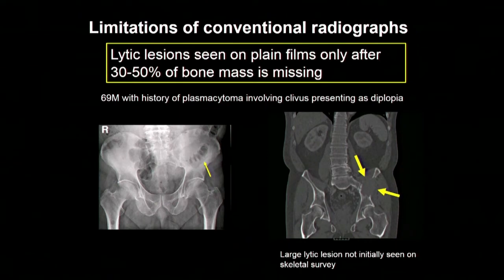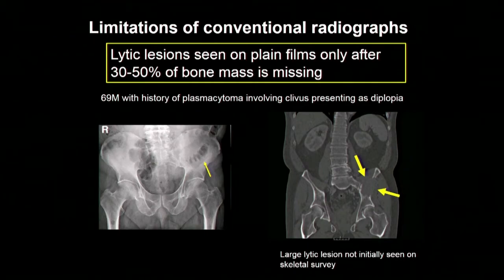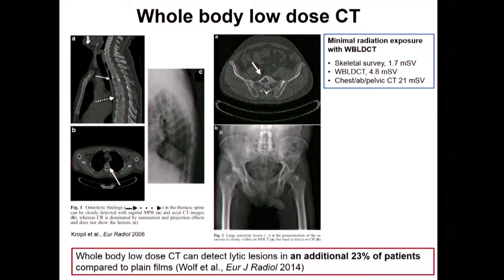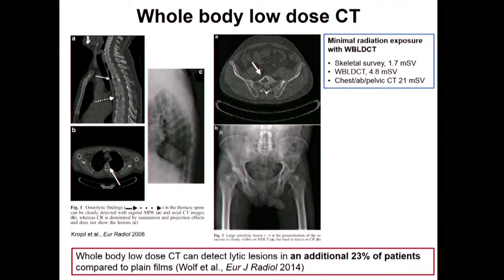With this in mind, there's been a movement toward incorporating more sensitive imaging into how we assess patients with multiple myeloma. This work has mainly been developed in Europe, where they developed the technique known as whole-body low-dose CT, using lower doses of radiation to image from stem to stern. It sits in between a skeletal survey and the standard chest-abdomen-pelvis CT. Using this modality, you can actually pick up bone lesions in patients felt to have a normal skeletal survey — you can see additional bone lesions in about 20% of patients.